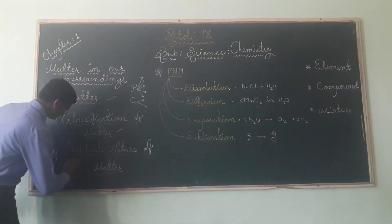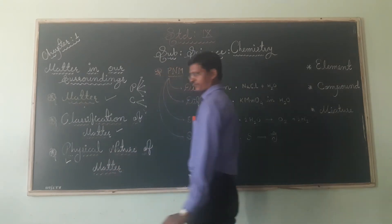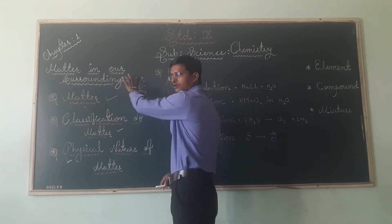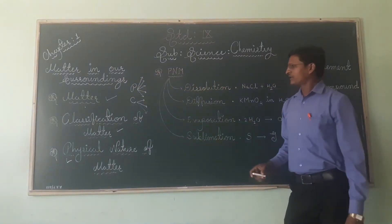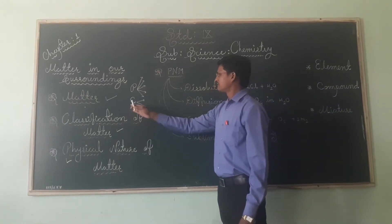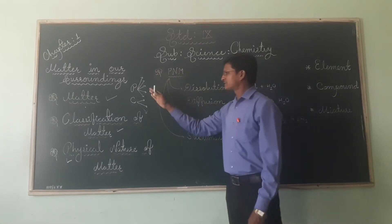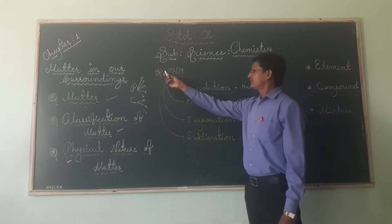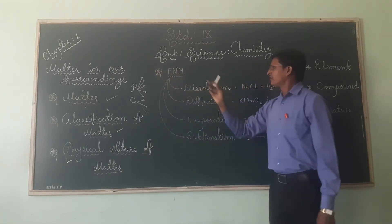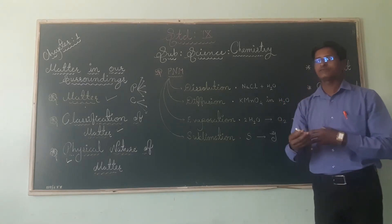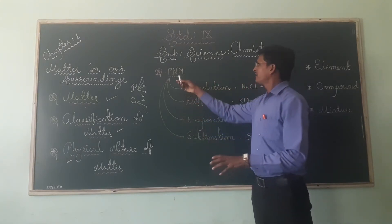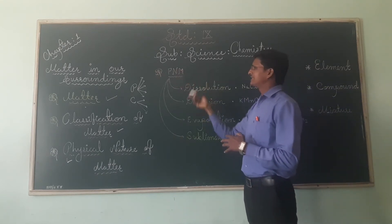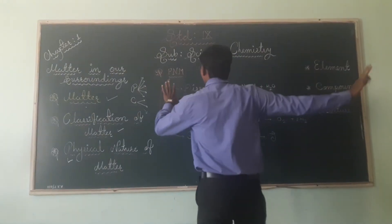Today, the main topic we are going to discuss is the physical nature of matter. The five states of matter — solid, liquid, gas, plasma, and BEC — and even element, compound, and mixture are included. Physically, we just look at the outside and determine the nature — we are not going inside, which would be the chemical nature.